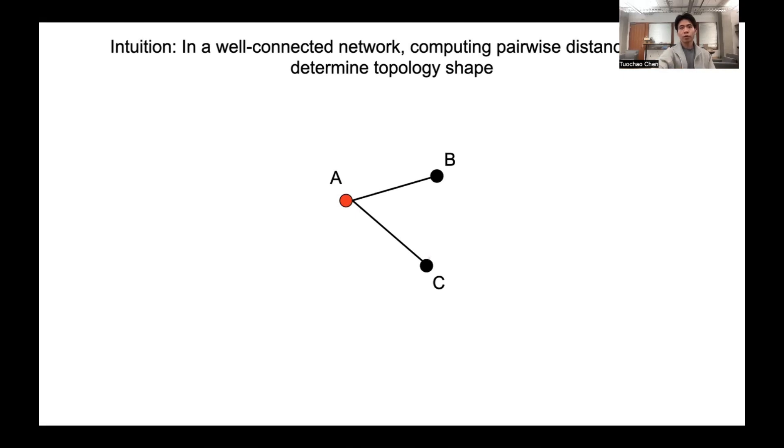However, if we can also measure the distance between B and C, the entire topology shape will be fixed. So even without any fixed anchors, if we can measure the pairwise distances among enough nodes, we can estimate the topology shape and the relative positions.